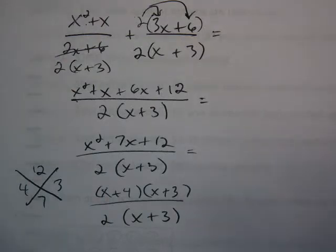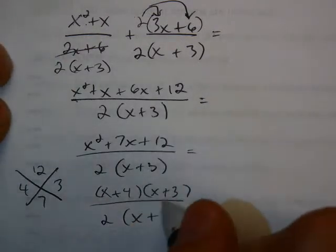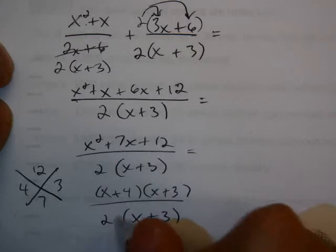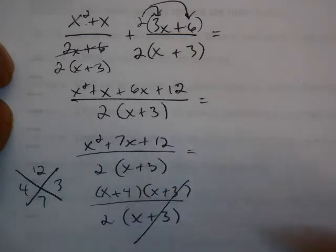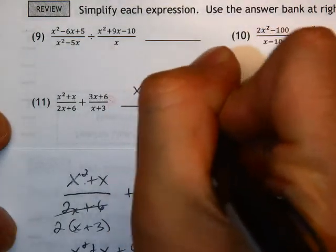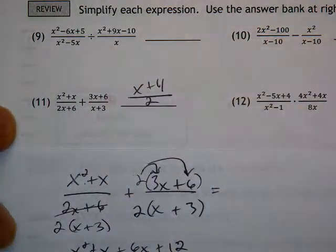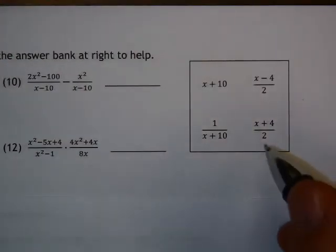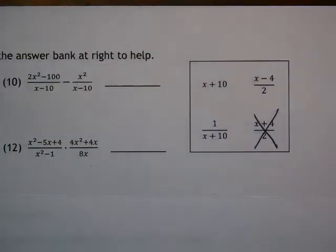Now I have one last thing I can do to simplify. Since these match on top and bottom, they're multiplying top and bottom. I can cancel those, which leaves me with just x plus 4, the quantity of x plus 4, divided by 2. If I look at my answer bank, there's x plus 4 over 2. I've used that one, so that one's good.